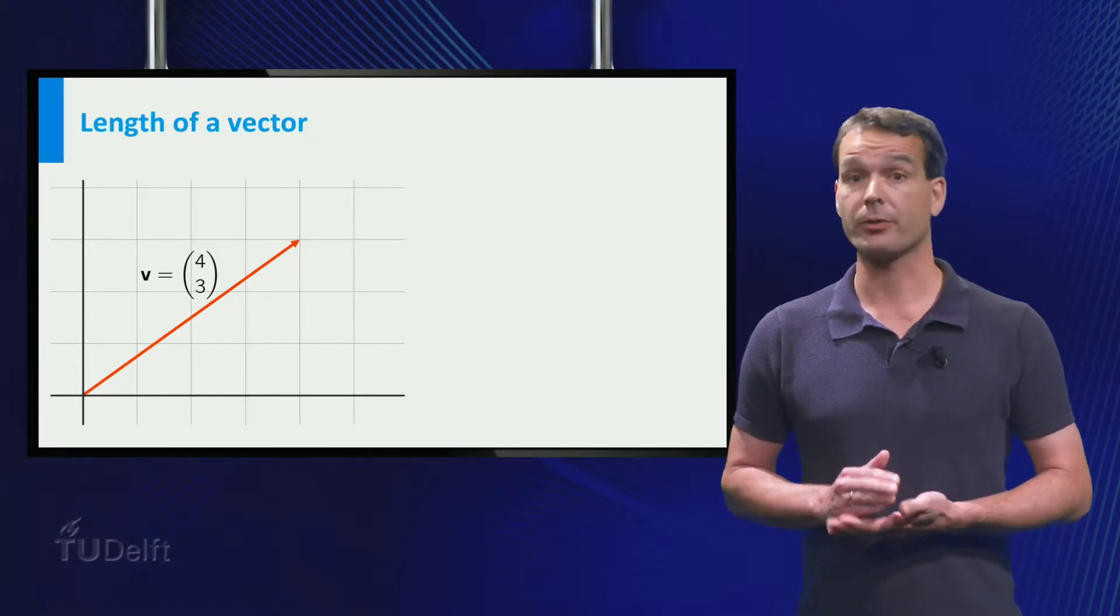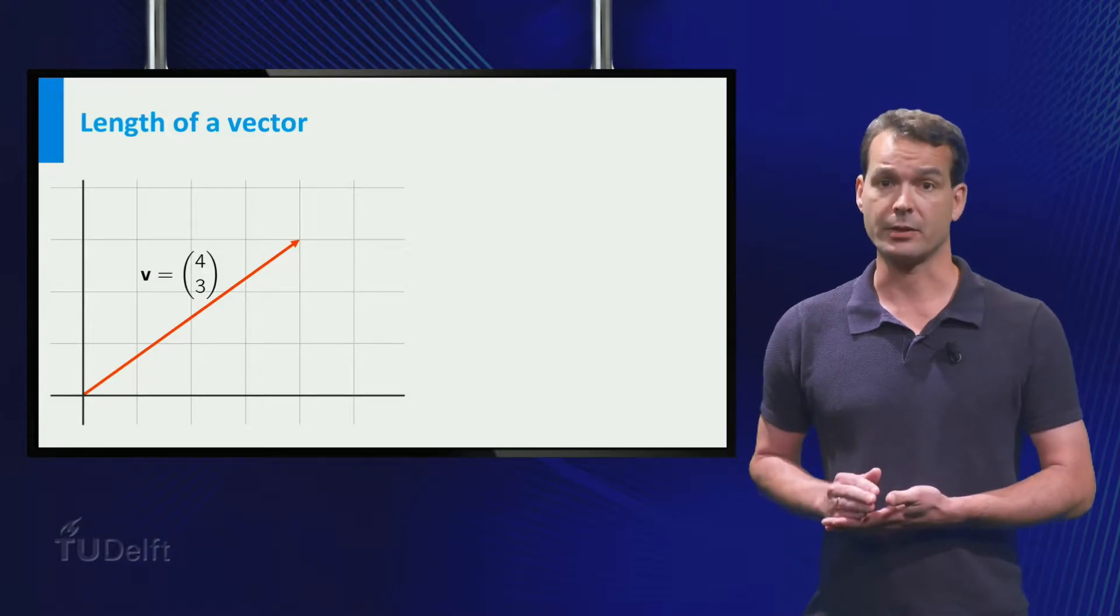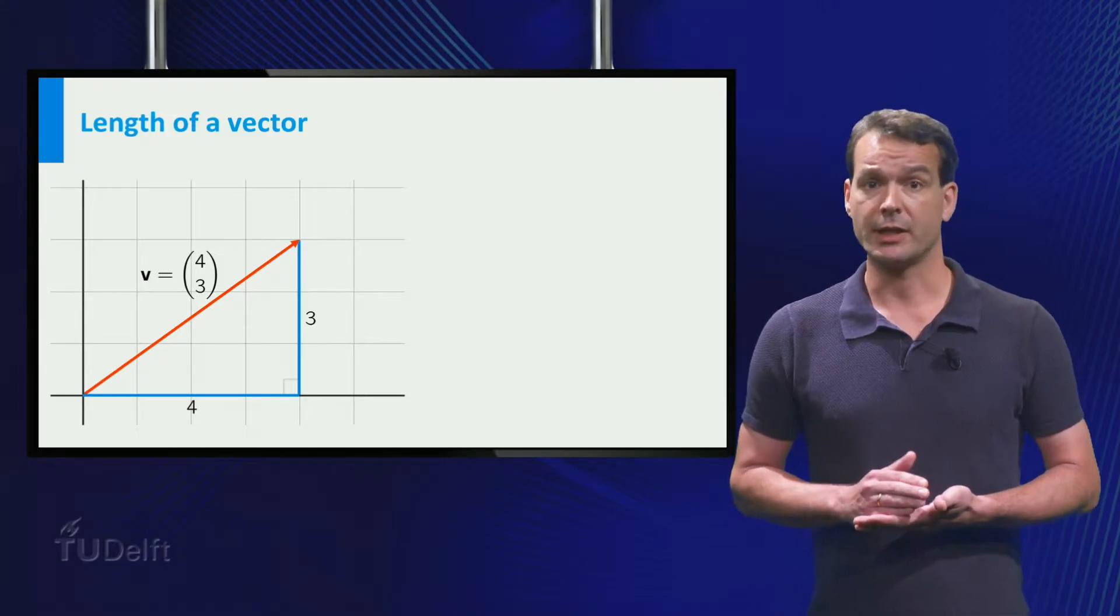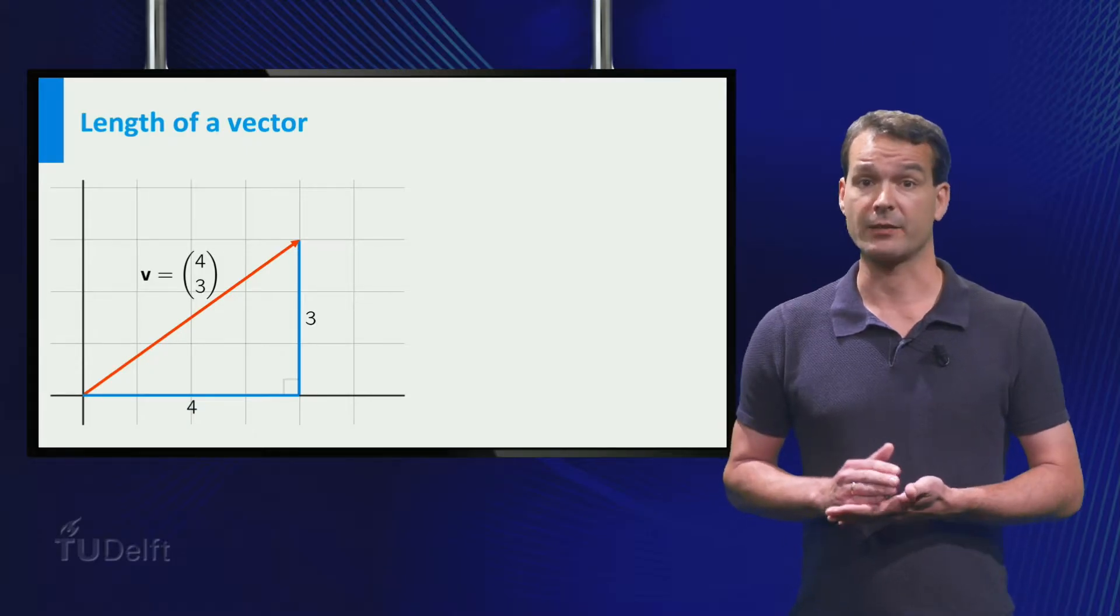Let's consider the vector. In the picture you see that the vector can be considered as the hypotenuse in a right triangle with sides of length 4 and 3.